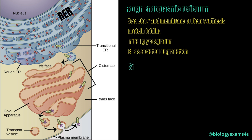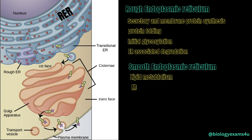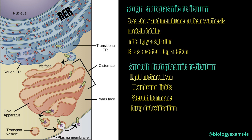The SER, or smooth endoplasmic reticulum, is also involved and is in close proximity with the RER. It is involved in lipid metabolism — it synthesizes membrane lipids including phospholipids and cholesterol, as well as steroid hormones such as estrogen and testosterone. The SER is abundant in the liver, where it detoxifies drugs, making them more soluble and easier to excrete from the body.